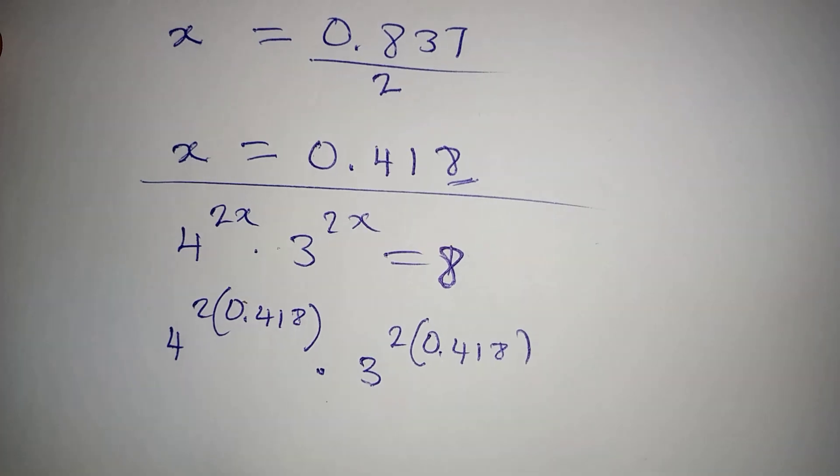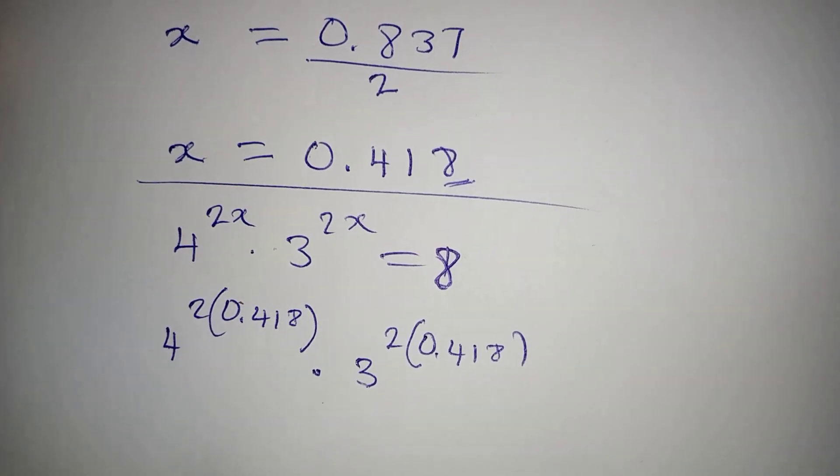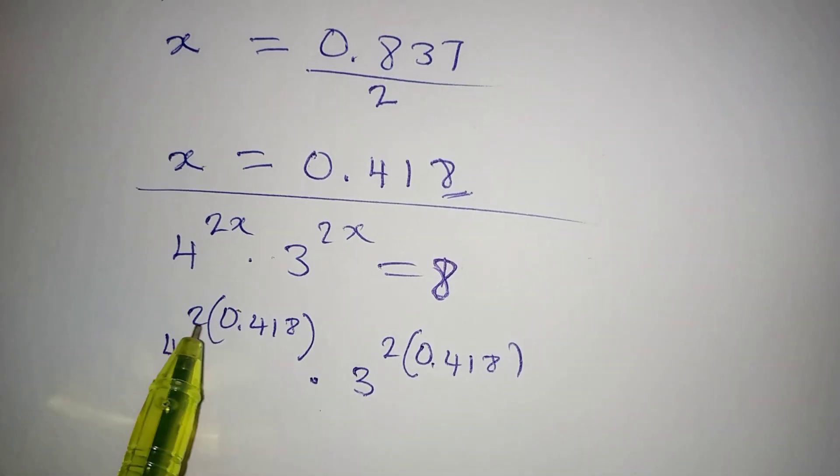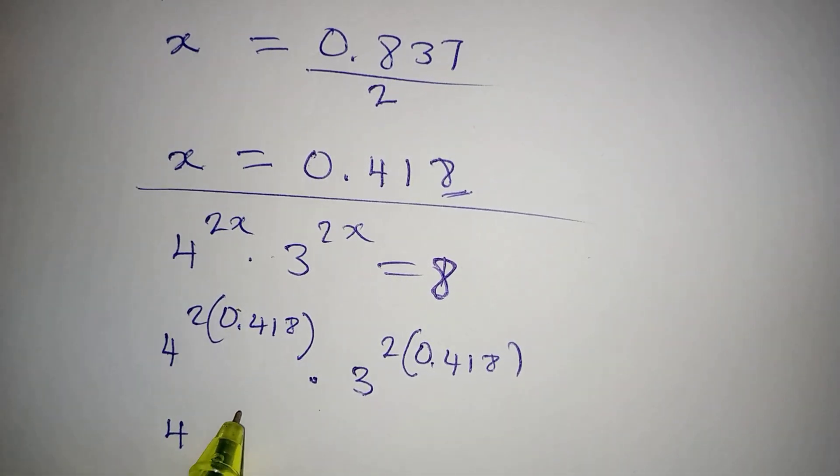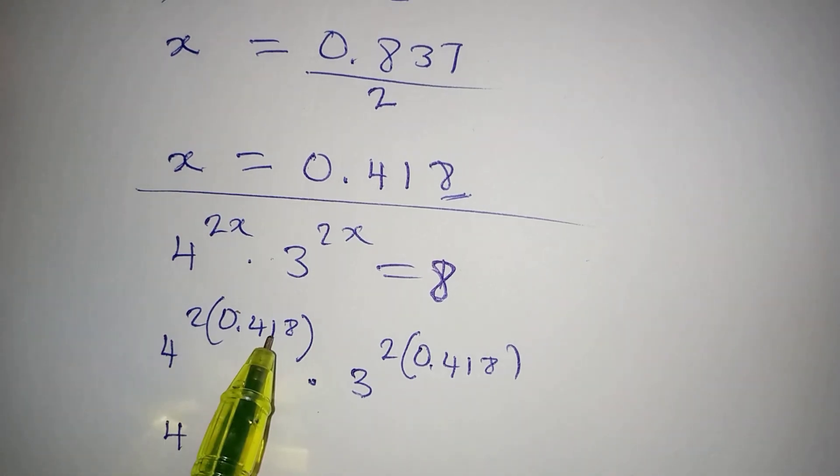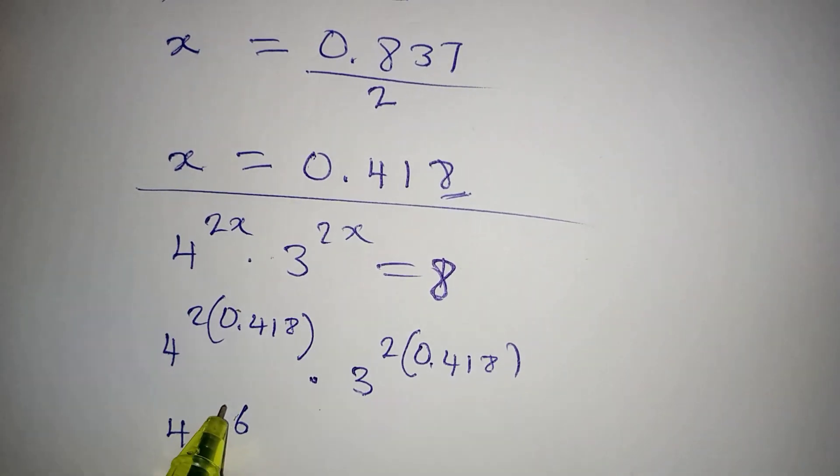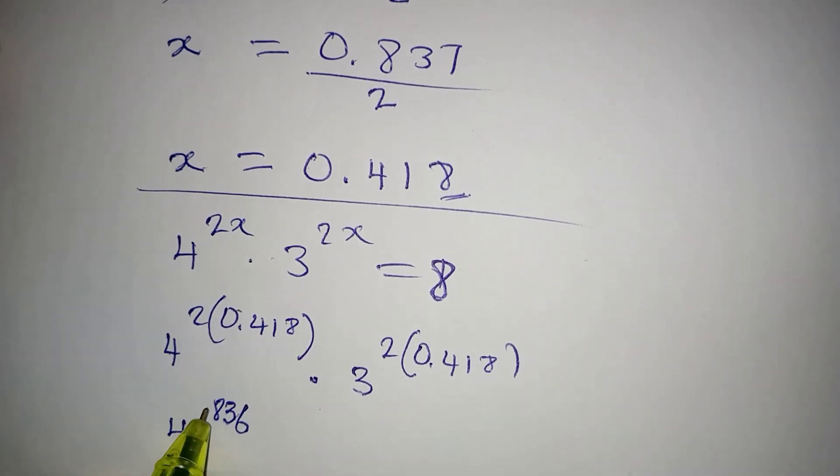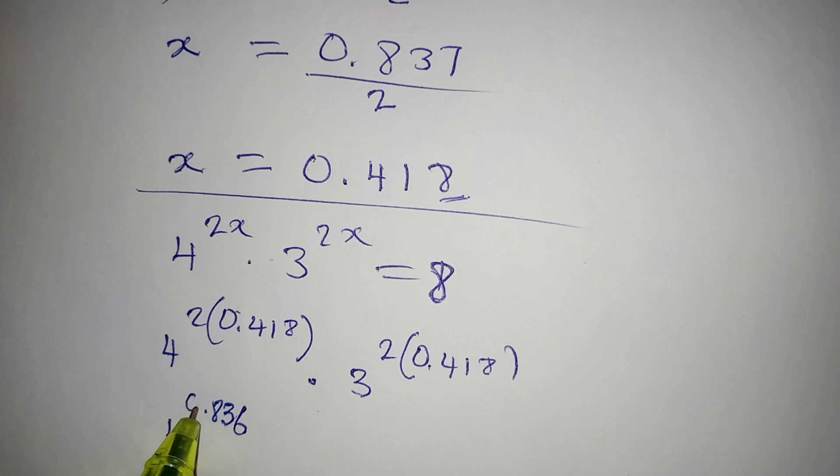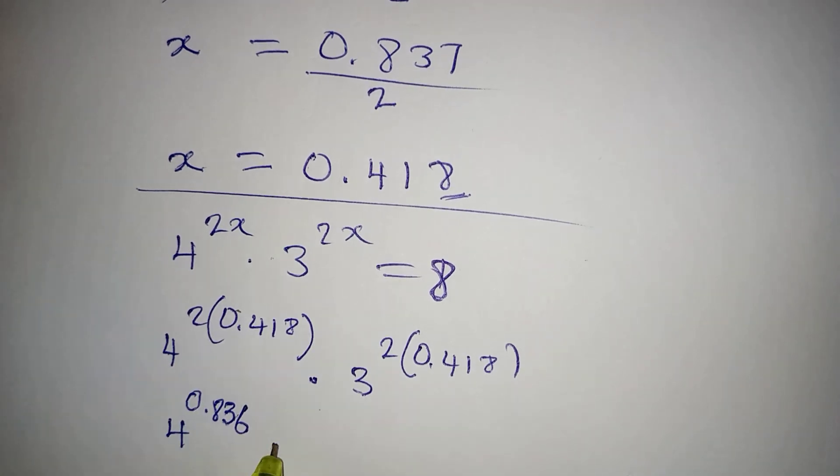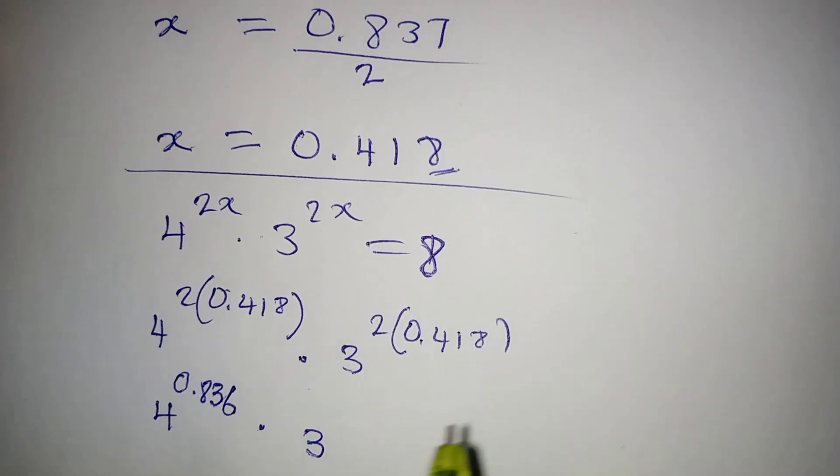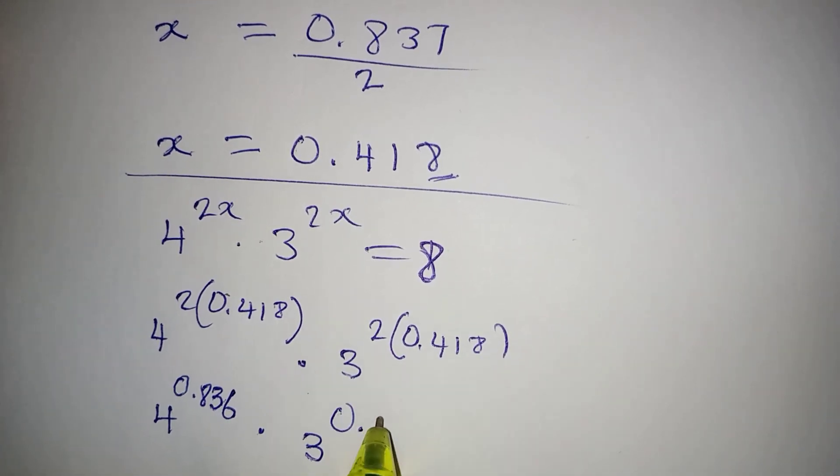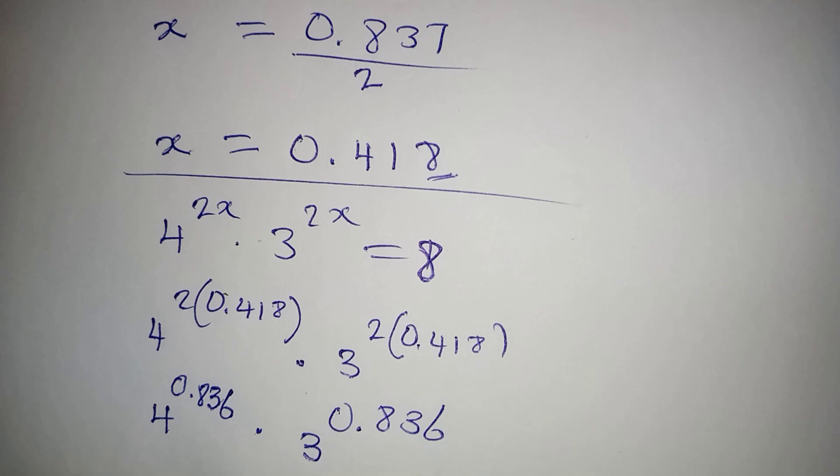Now let's multiply this very quickly. We have 2 times 0.418, and when you multiply this, you get 0.836.